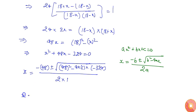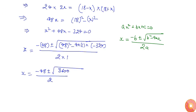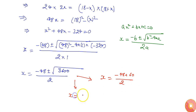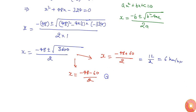Solving this gives minus 48 plus or minus 60, divided by 2. So there are two cases: x equals (minus 48 plus 60) divided by 2, which is 12 divided by 2, giving 6 kilometres per hour; or x equals (minus 48 minus 60) divided by 2, which is minus 108 divided by 2, giving minus 54 kilometres per hour.